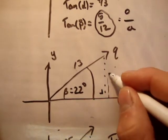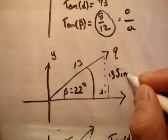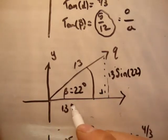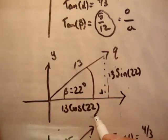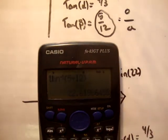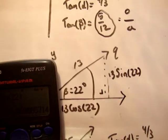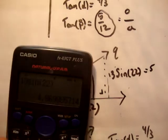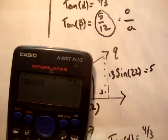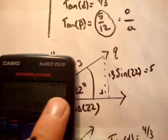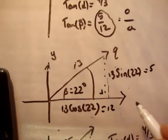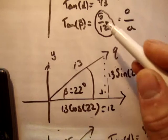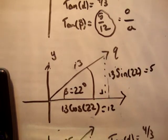This here is equal to 13 sine 22. This is equal to 13 cosine 22. Let's check that out. 13 times the sine of 22 is equal to 4.8 which is equal to 5. And 13 times the cos of 22 is 12.05. And look, 5 and 12. So that's correct. So we know we're correct first of all.